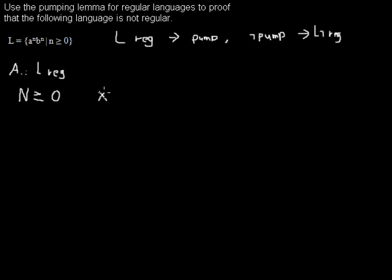But if we have any word that is element of the language and the length of the word is greater or equal N, that means we want to find a word that is greater or equal N and the word has to follow some conditions that are named in the pumping lemma.